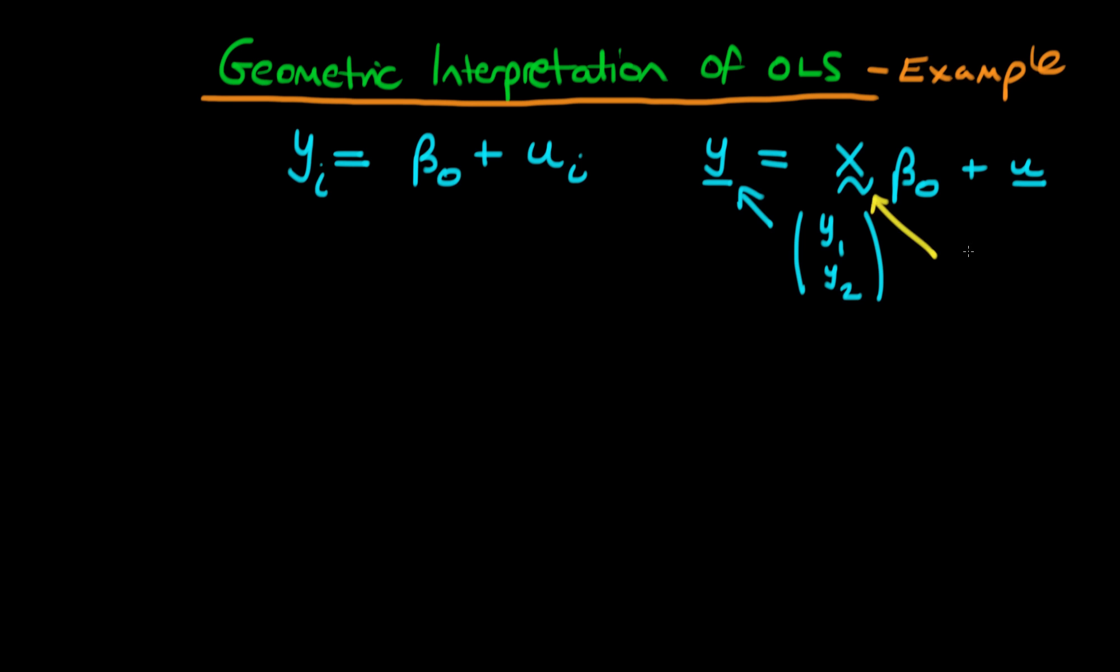Okay, so what's contained in X? Well we can think about X as in this example just containing 1s, because essentially all we want is we want y to be equal to beta 0 plus the respective component of u for each of the two examples.